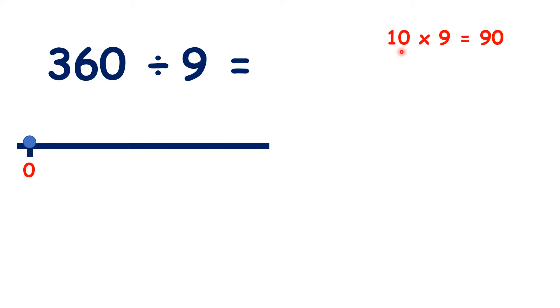But we do know that 10 times 9 is 90, so if we count up in steps of 10 times 9, we have 90, 180, 270, and 360.